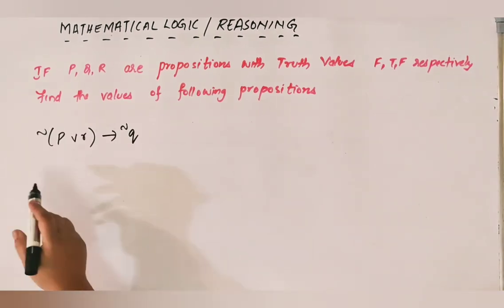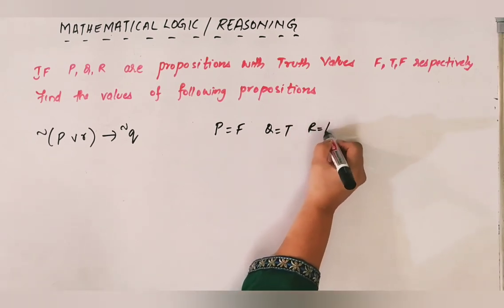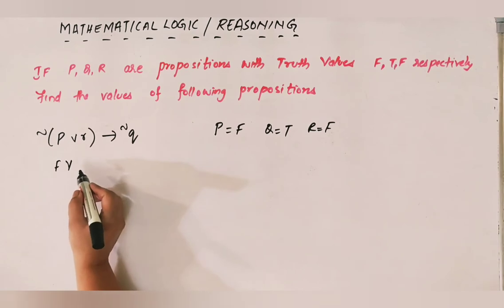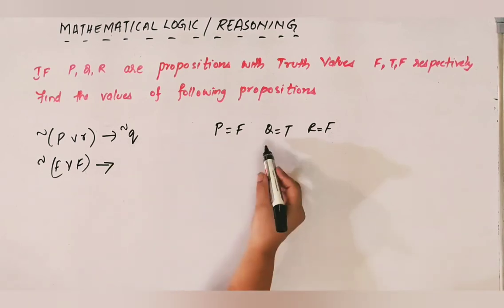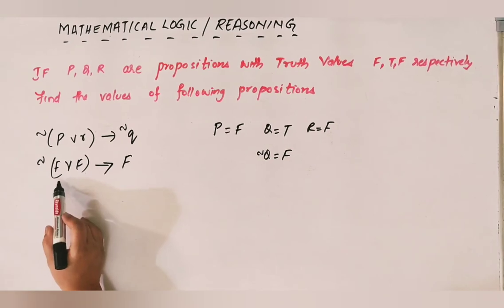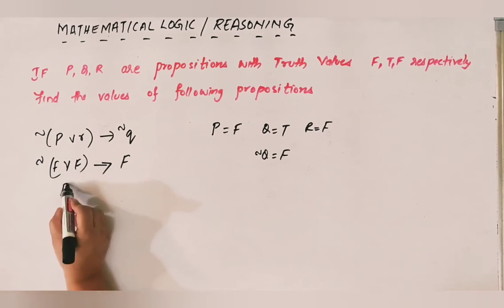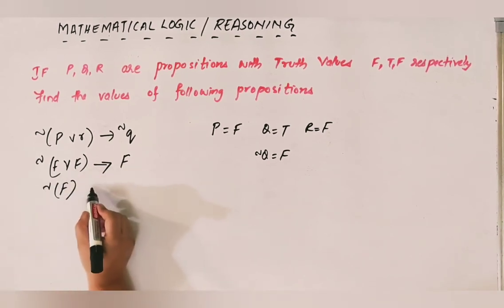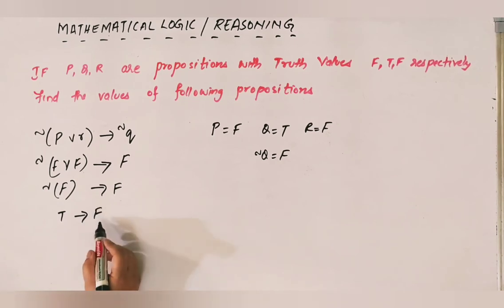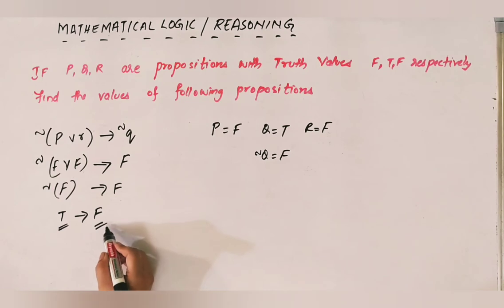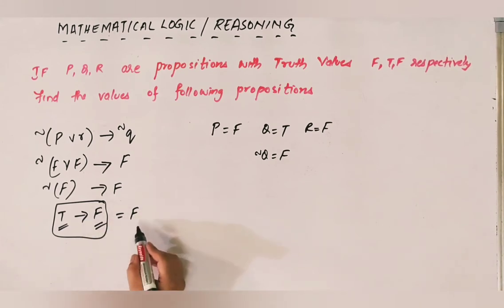Another expression with P false, Q true, R false: (P OR R) NOT, conditional NOT Q. P OR R is false OR false = false. NOT of false is true. NOT Q is false. True conditional false — this is the TF case, so the result is false. Answer is false.